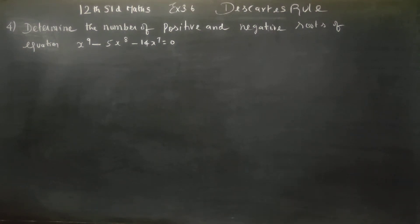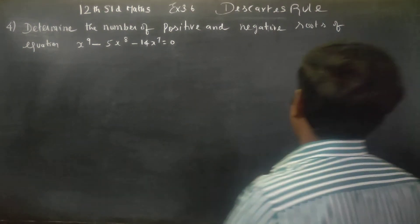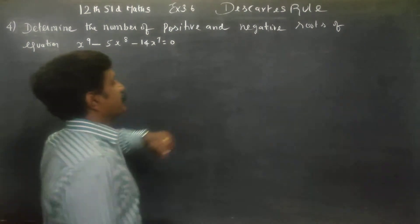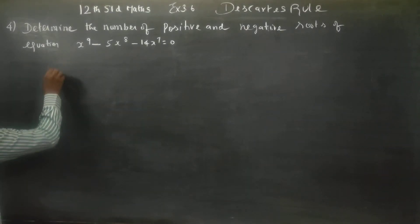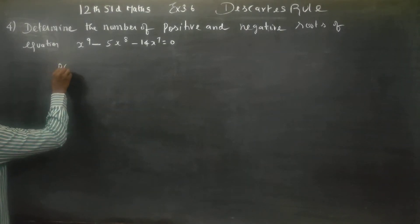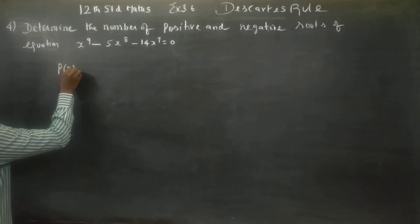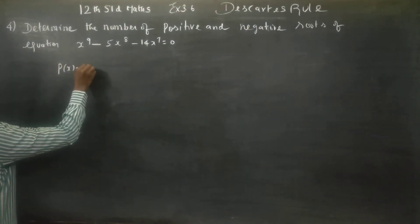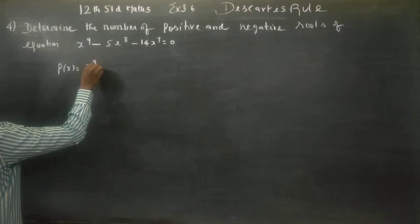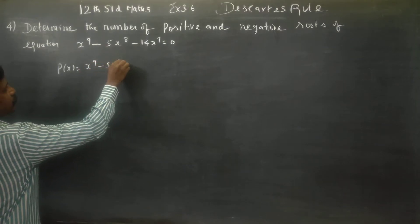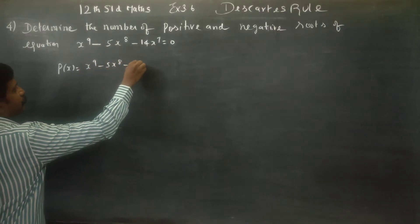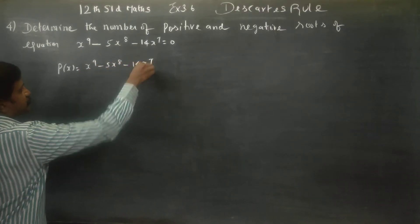Hello students. Determine the number of positive and negative zeros of the equation. You just name it as p of x: x power 9 minus 5x power 8 minus 14x power 7.